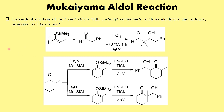The Mukaiyama aldol reaction involves a cross aldol reaction of a silyl enol ether with a carbonyl compound in the presence of a Lewis acid. When carrying out aldol condensation in the presence of base, the problems we observe include self-polymerization, self-condensation, and other issues. The Mukaiyama aldol condensation provides much more utility because we convert one of the reacting substrates into its silyl enol ether and then react it with the respective aldehyde.